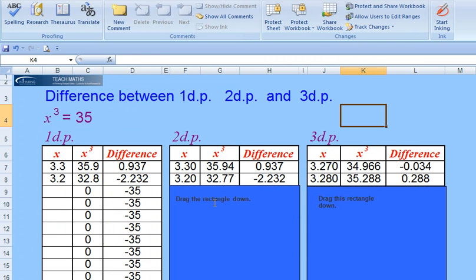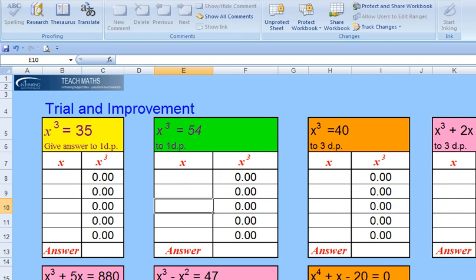In trial and improvement, you get asked to solve problems to 1, 2, or 3 decimal places. Your teacher will demonstrate briefly what that means. And then it's up to you to have a go at some of these questions to see if you can solve them to 1 decimal place, 3 decimal places, or 2 decimal places.